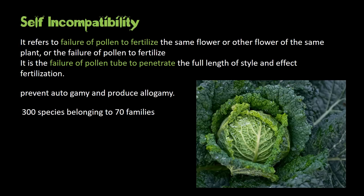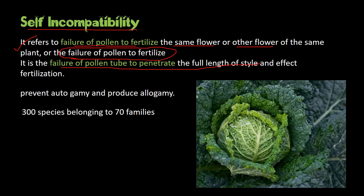What is self-incompatibility? As the name itself suggests, it is the failure of pollen grains to fertilize within the same plant. Botanically, it is the failure of pollen grains to fertilize the same flower or other flowers of the same plant. It can also be described as the failure of the pollen tube to penetrate the full length of the style and effect fertilization — so fertilization is not achieved.